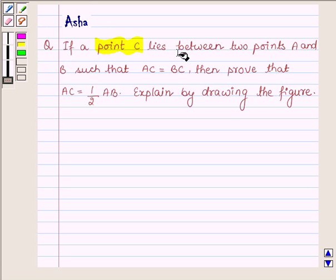If a point C lies between two points A and B such that AC is equal to BC, then prove that AC is equal to half of AB. Explain by drawing the figure.